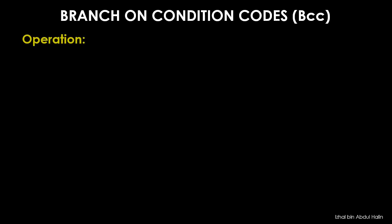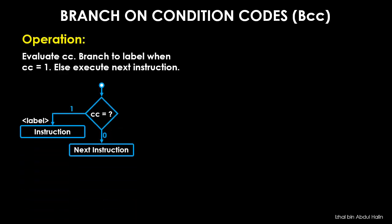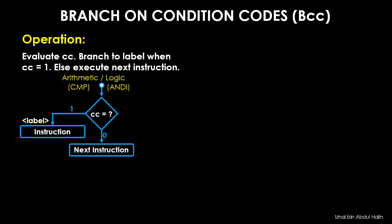All of the instructions in the BCC group read the value of a condition code (CC for short) to determine whether to branch or not. According to its general flowchart, a branch is executed if the condition code is 1; if it is 0, the preceding instruction is executed instead. Usually an arithmetic or logical instruction such as CMP or ANDI is placed before a BCC instruction, because these instructions can be used to set the condition codes before the BCC instruction evaluates its outcome.